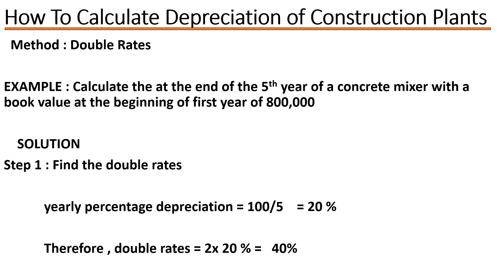We have an example: we are told to calculate the depreciation at the end of the 5th year of a concrete mixer, with a book value at the beginning of the first year of 800,000. So the book value is 800,000 at the beginning of the first year.